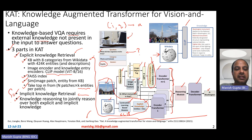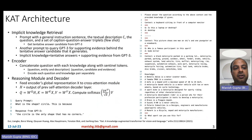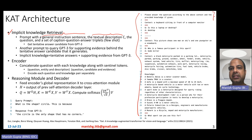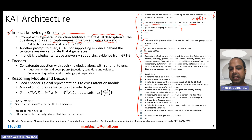Implicit knowledge retrieval is supported by GPT-3. The first thing you do is take your image and come up with a textual description — this could be a caption, or object tags. You also have a prompt with a general instruction sentence: 'Please answer the question according to the whole context and the provided knowledge if given.' You provide this context, which is the caption obtained from the image, and then give question-answer few-shot examples — caption, question, answer repeated a few times — and then for the last one, you expect GPT-3 to come up with the answer. That's how you create the GPT prompt. These are tentative answers, not the final answers, because you must modulate these with the explicit knowledge.